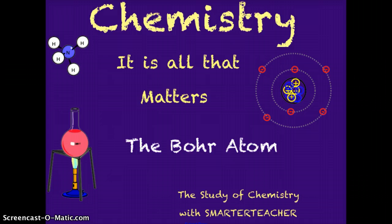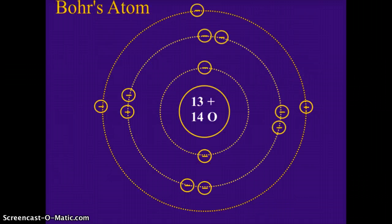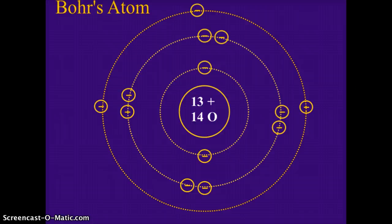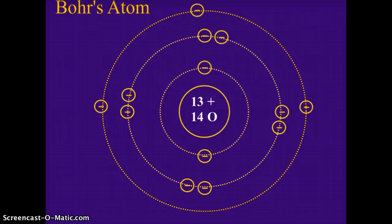Bohr's atom is a nice tool to use to understand how the atom is arranged with protons, neutrons, and electrons. It is an oversimplification of the atom, but it does help us model how electrons, protons, and neutrons are arranged, and it also helps a little bit in understanding how some of the bonding practices take place. The Bohr atom is only functional really with the first 18 to 20 elements; after that it gets complex with transition and inner transition metals.